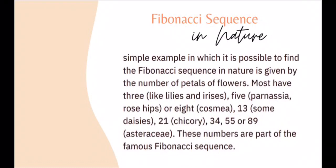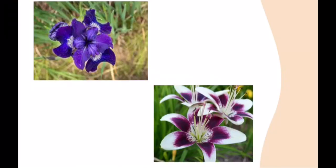A simple example in which it is possible to find the Fibonacci sequence in nature is given by the number of petals of flowers: most have 3, like lilies and irises; 5, like the pansy or rose hips; 8, like cosmea; 13, like some daisies; 21, like chicory; and 34, 55, or 89, like some asters. These numbers are all part of the famous Fibonacci sequence.